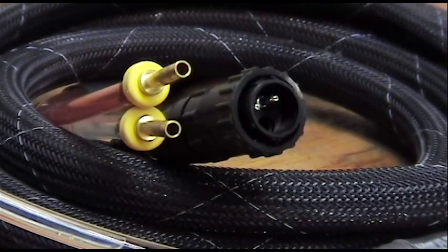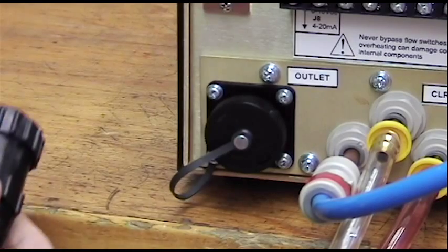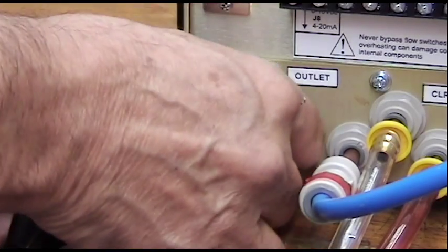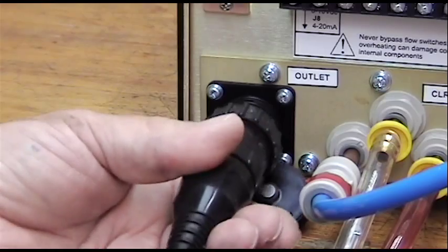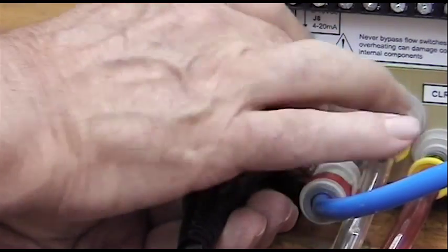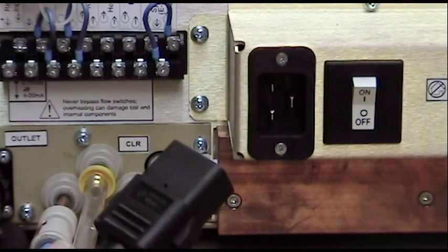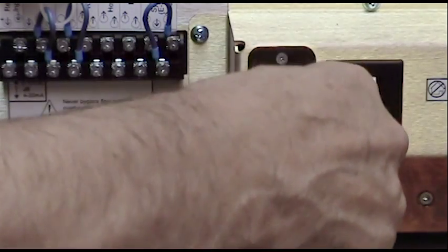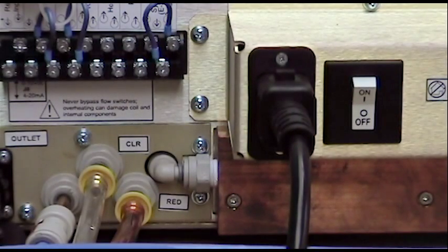In the same sleeve that carries the water to and from the workhead is the cable that supplies the RF power to the coil. On the end of this cable is a connector which plugs into and then is turned to lock onto the RF outlet on the back of the inverter. The only thing remaining is to plug the connector on the power lead into the socket next to the power switch.